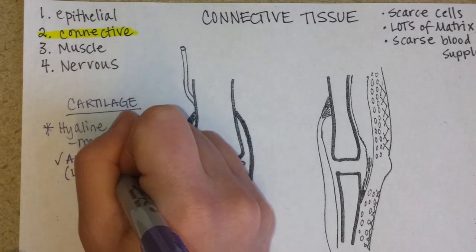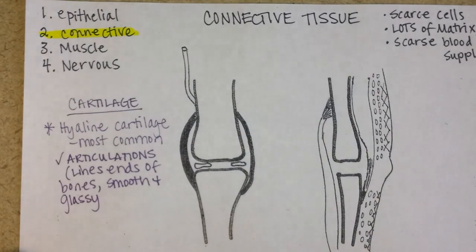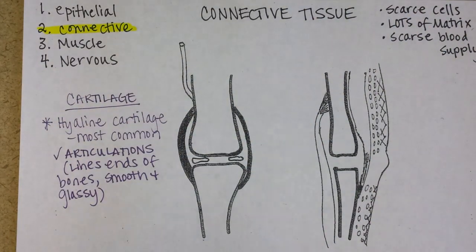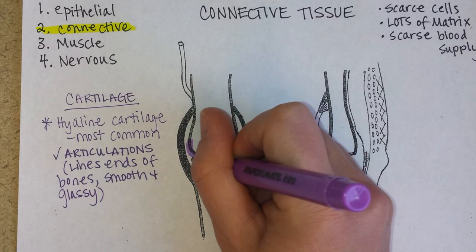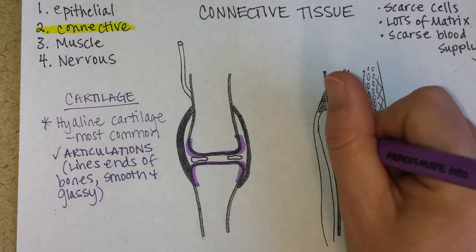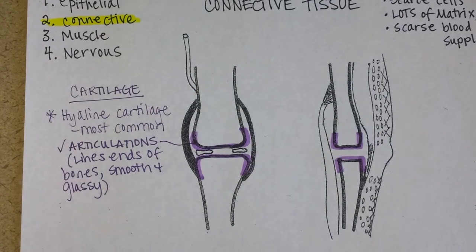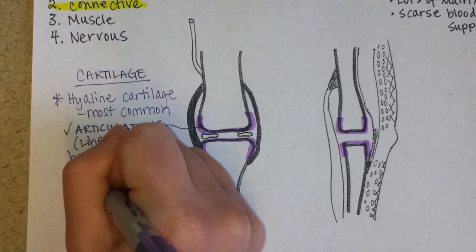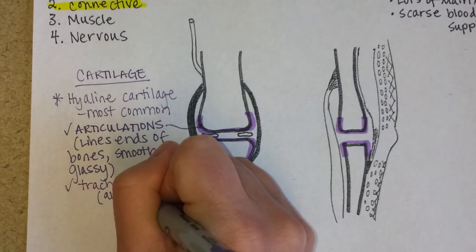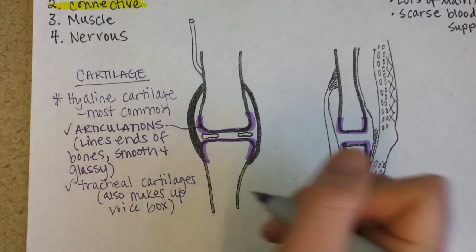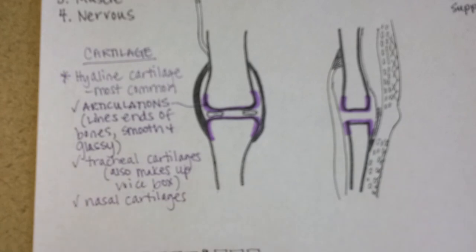Articular cartilage lines the ends of bones and should be smooth and glassy to reduce friction when you bend your knee, for example. Let's go ahead and color that on our imaginary joint — the ends of the bones are always lined with articular cartilage. Some other places you have hyaline cartilage are in your trachea, your larynx or voice box, and your nose, where nasal cartilages give us the unique shape of our nose.